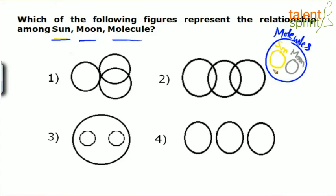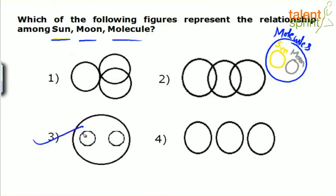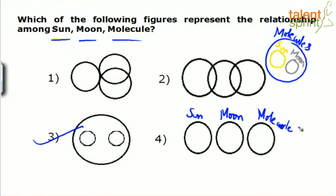Sun and Moon should not overlap, and both should be part of the larger category which is molecules. So the correct answer is option 3. Now, option 4 shows three different circles — Sun, Moon and molecule all separate — meaning all three are disjoint. But you know that Sun is made up of molecules and Moon is also made up of molecules, so they cannot be unconnected. Option 4 is eliminated.